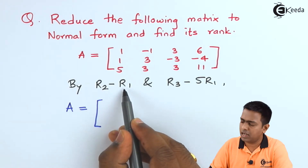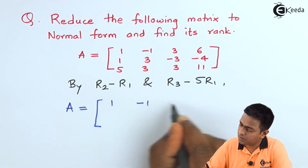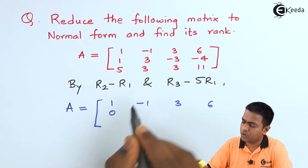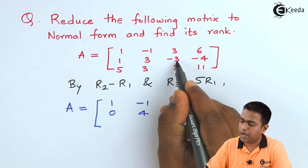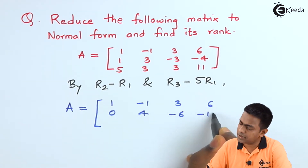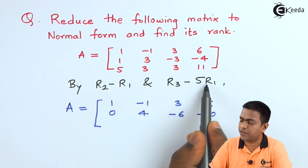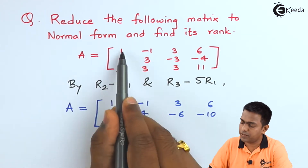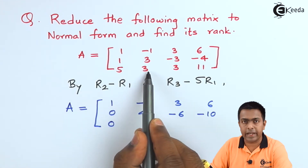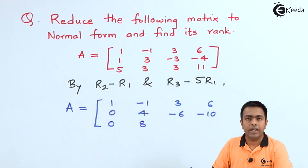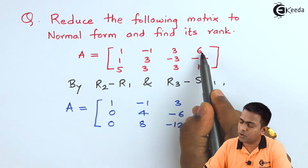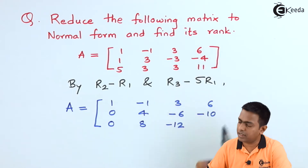R1 remains unchanged. For R2 minus R1: 1-1=0, 3-(-1)=4, -3-3=-6, -4-6=-10. For R3 minus 5×R1: 5-5=0, 3-(-5)=8, 3-15=-12, 11-30=-19. So we now have zeros in the first column for rows 2 and 3.